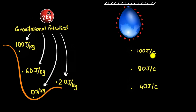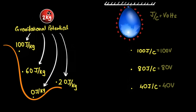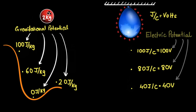Because electric potential is such an important concept, we actually give a separate unit for it: joules per coulomb is called volts. So we say this point is at an electric potential of 100 volts, this point is at 80 volts, and so on. These numbers are called electric potential, analogous to gravitational potential.